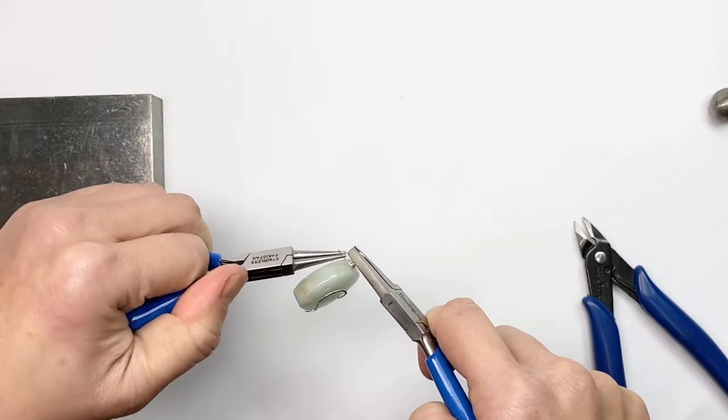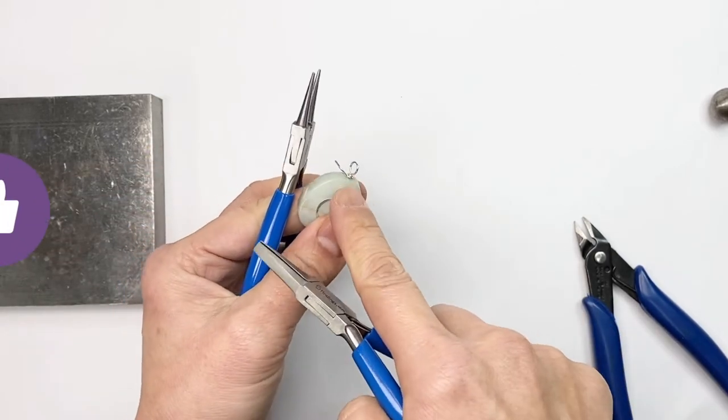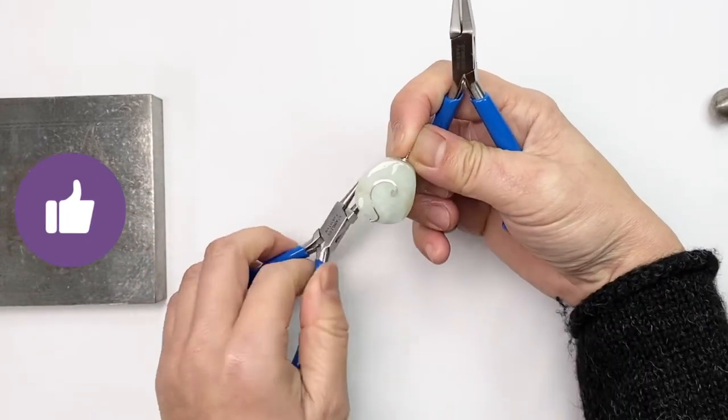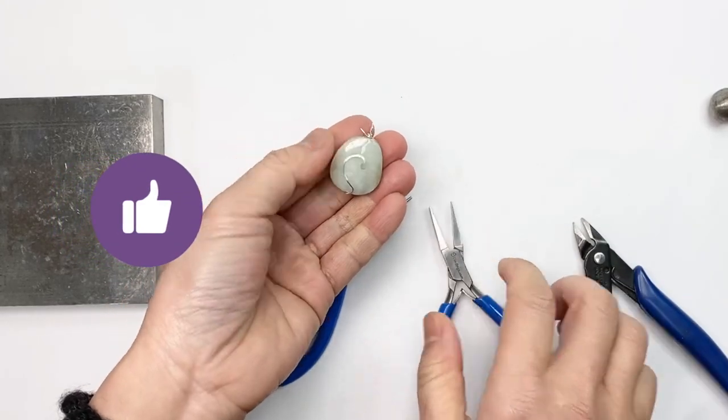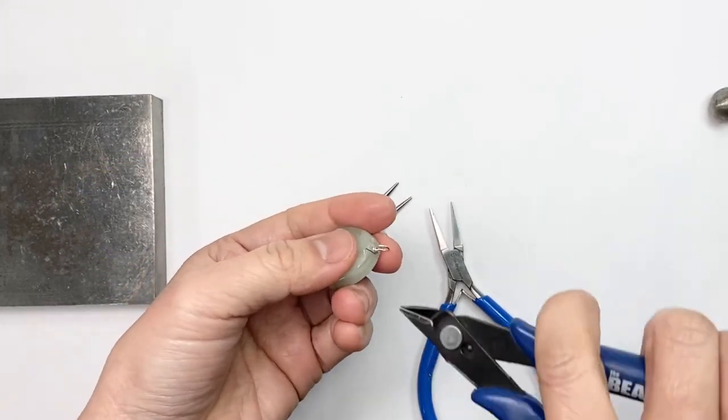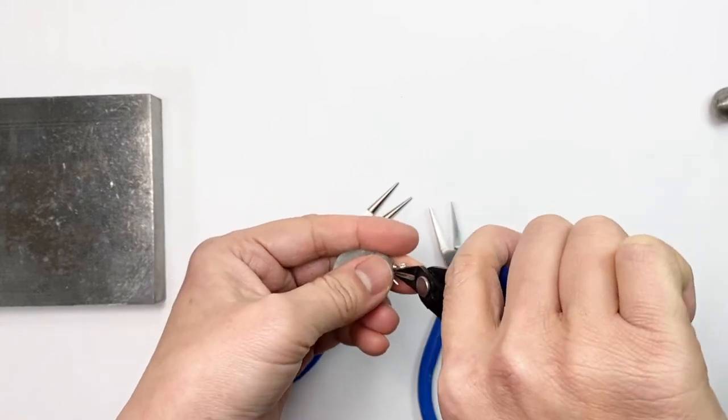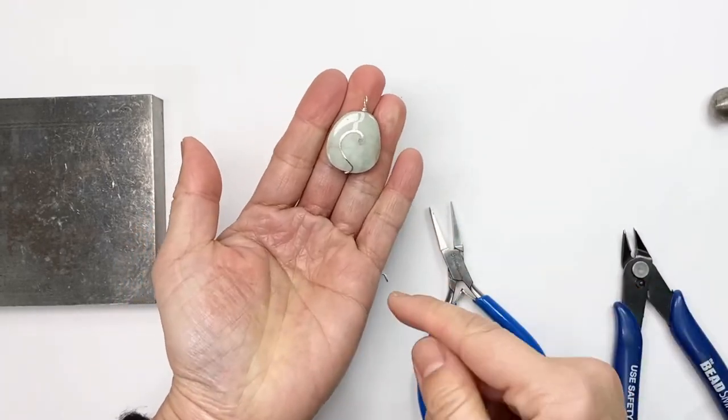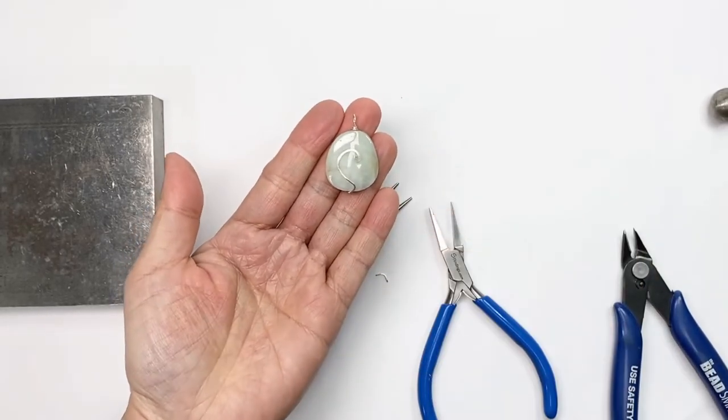And don't worry if you have to adjust, because I want the wire to be all the way flush. And there is my stone and I'm going to trim it. Now it's ready for the chain to go through.